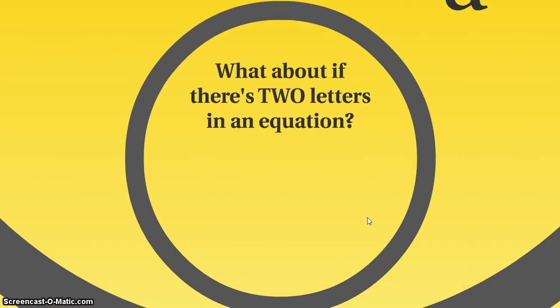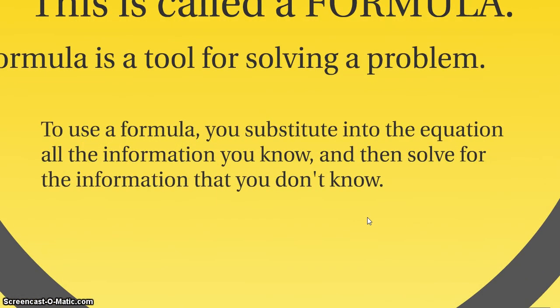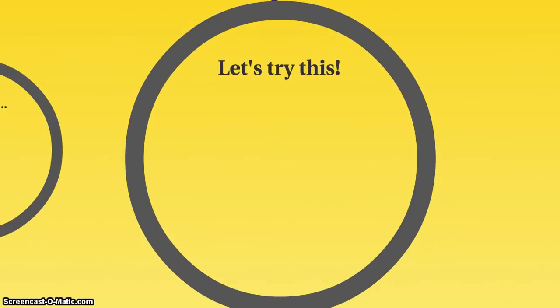Okay, so you might be asking, all right Heidi, but what about if there's two letters in an equation? What do we do then? Because that really does look scary. So this is called a formula. And again, it's something that you can solve. It's simply a tool that's going to help you to solve a problem. It's going to help you. It's not a scary thing. To use a formula, you're going to substitute into the equation all of the information that you know, and then solve for the information that you don't know. Because even though they're putting a letter in there, they're going to be giving you that information anyway.